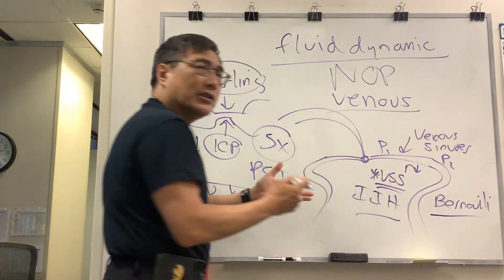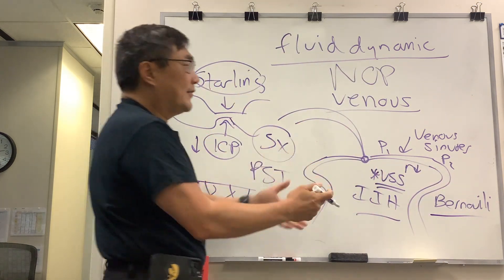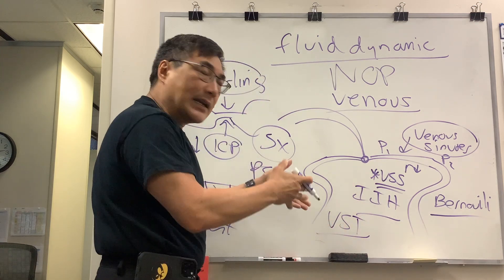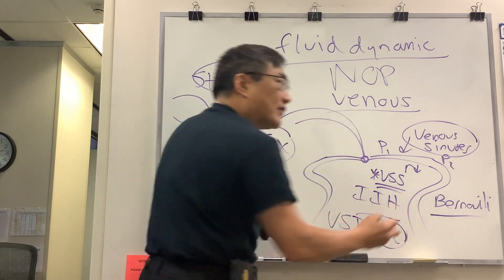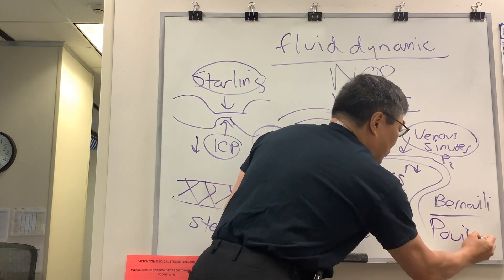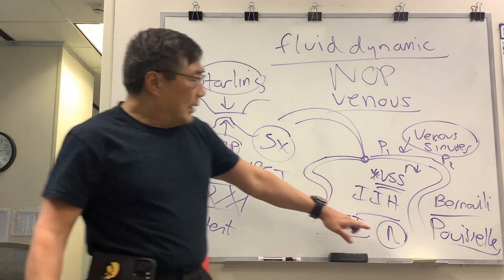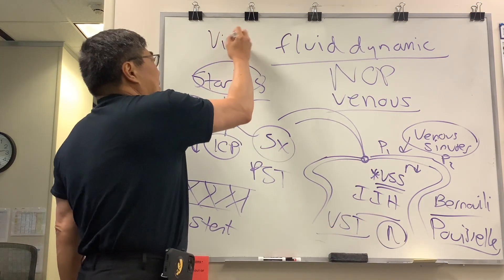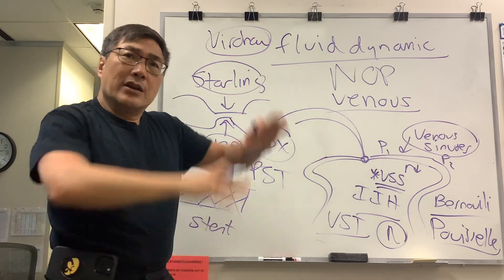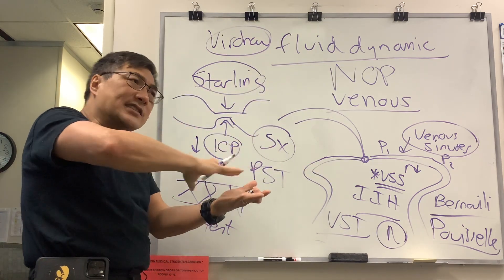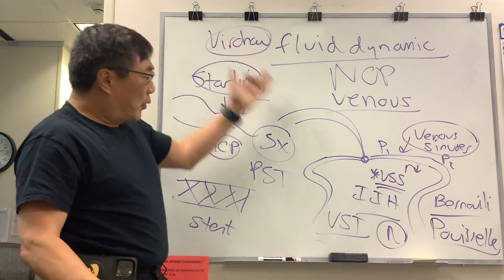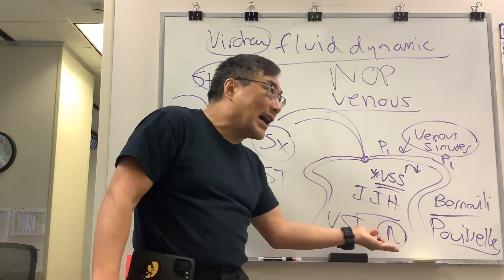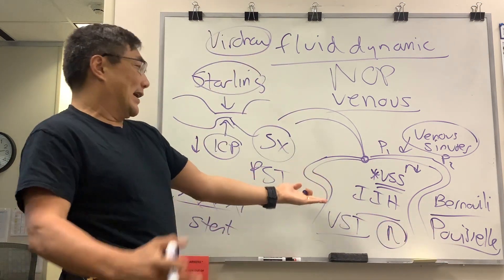However, Bernoulli does not take into account viscosity. In the venous sinus system, we have venous sinus stenosis but also venous sinus thrombosis. In thrombosis, an additional risk factor is viscosity, and that is governed by Poiseuille's law — accounting for not only pressure, radius, and velocity, but also viscosity. That is dictated by Virchow's triad: endothelial damage, venous stasis, and a hypercoagulable state. Venous sinus thrombosis, as opposed to venous sinus stenosis, requires accounting for viscosity under Poiseuille's law, and it can look just like IIH.